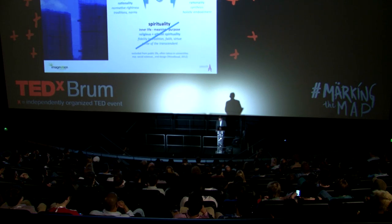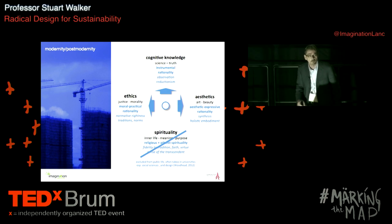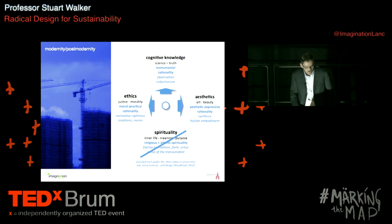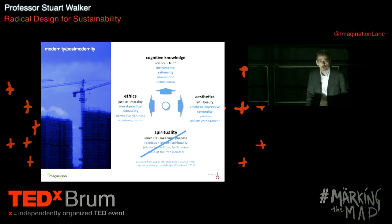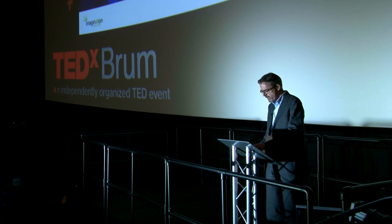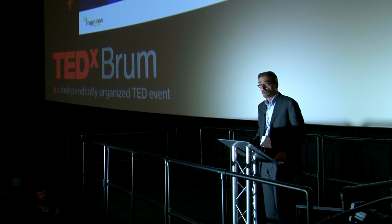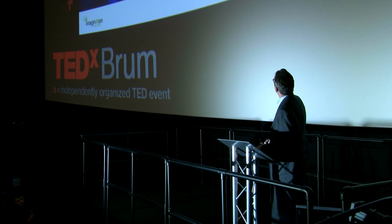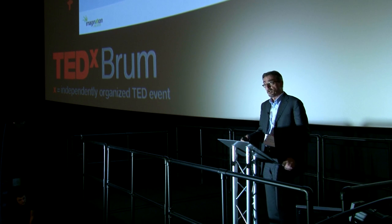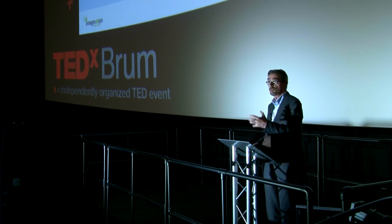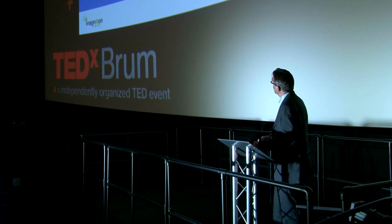What does modernity mean in terms of how we think about ideas? Well, what it did was it split knowledge up into compartments. Cognitive knowledge went off into one department and was used in science for the advancement of science, the observation and the analysis of the natural world. Ethics and justice and morality went off into the social sciences. Art went off into the art department. And spirituality, religion, profound values, meaning — basically dropped out of the mix. And so what became prevalent and prominent in modernity was cognitive knowledge. This became the privileged form of knowledge — empirical evidence, evidence-based research. This became the source of what we call reliable knowledge.